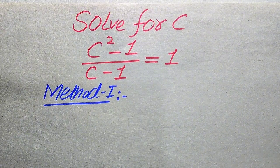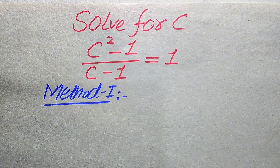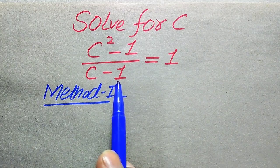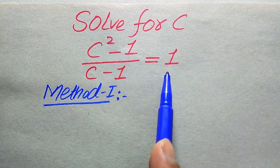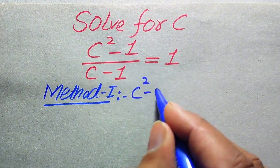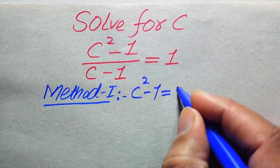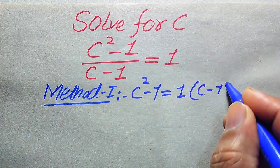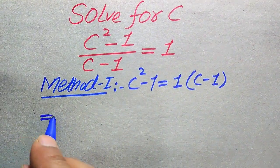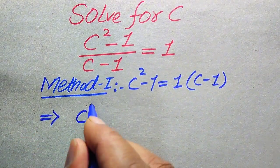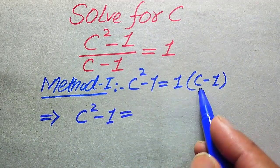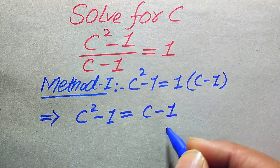Now we move toward the solution from Method 1. Here, (c - 1) is in the denominator on the left-hand side, so we move it to the right-hand side where it multiplies by 1. This gives us: c² - 1 = 1 × (c - 1), which simplifies to c² - 1 = c - 1.